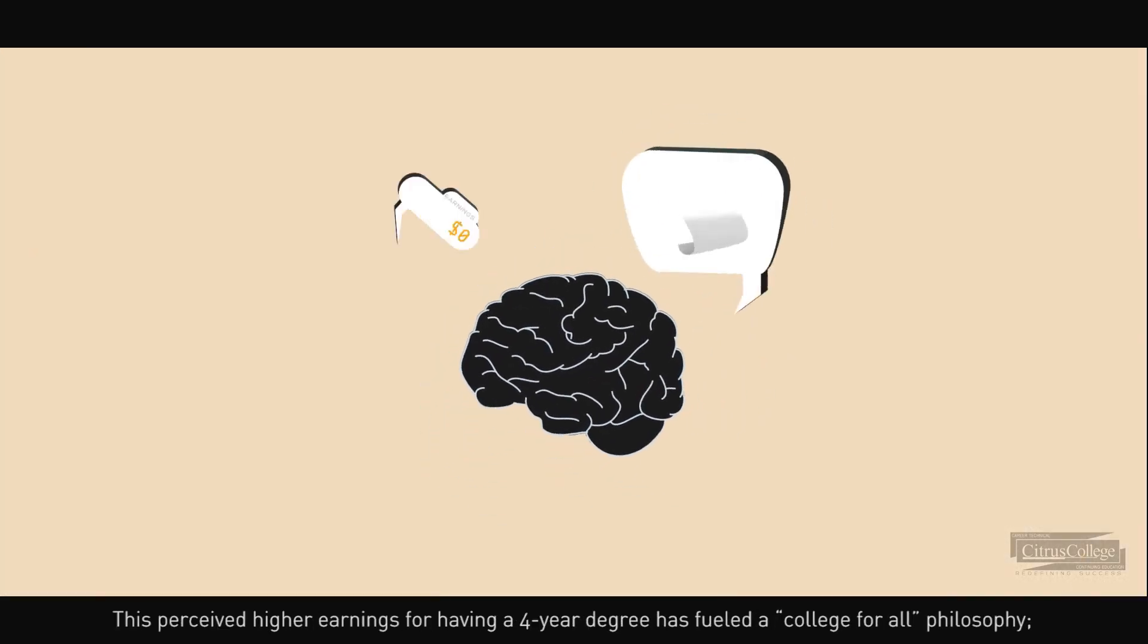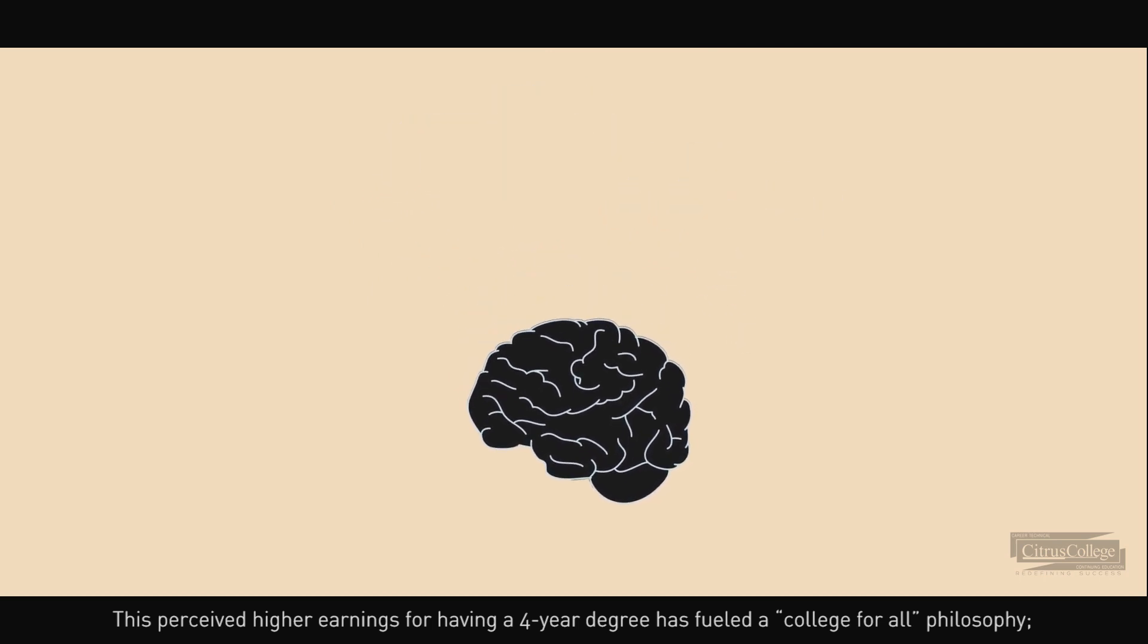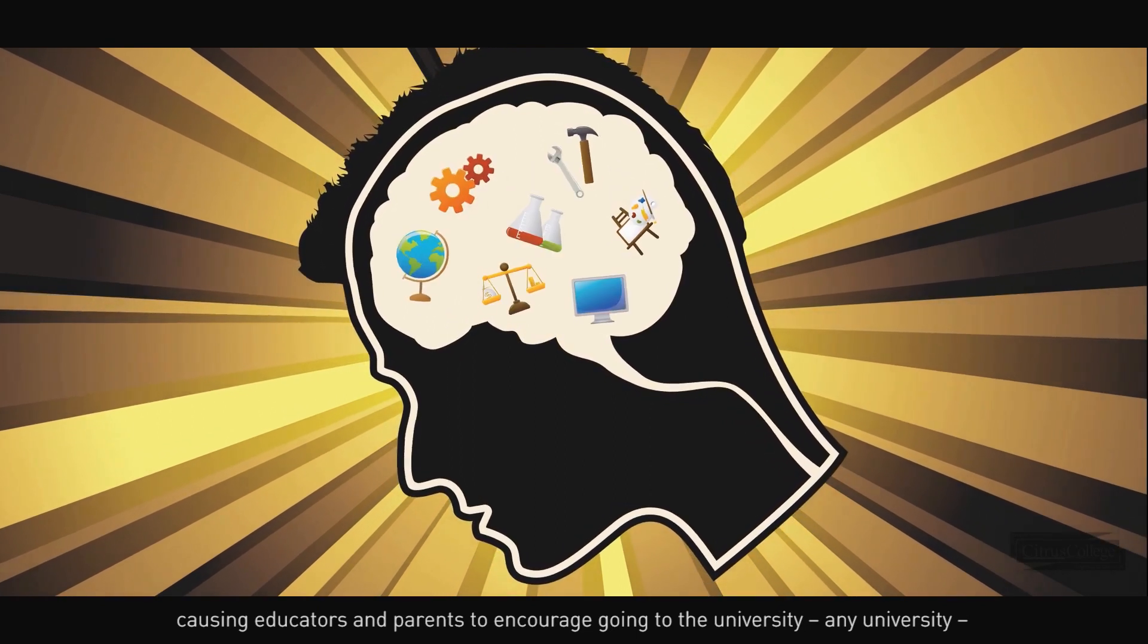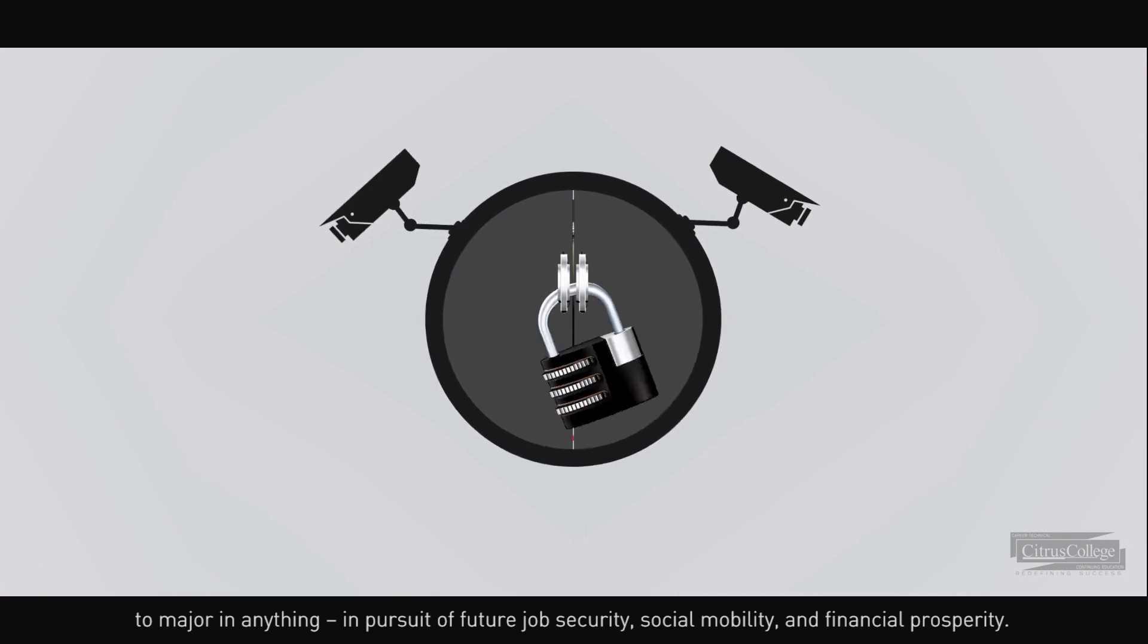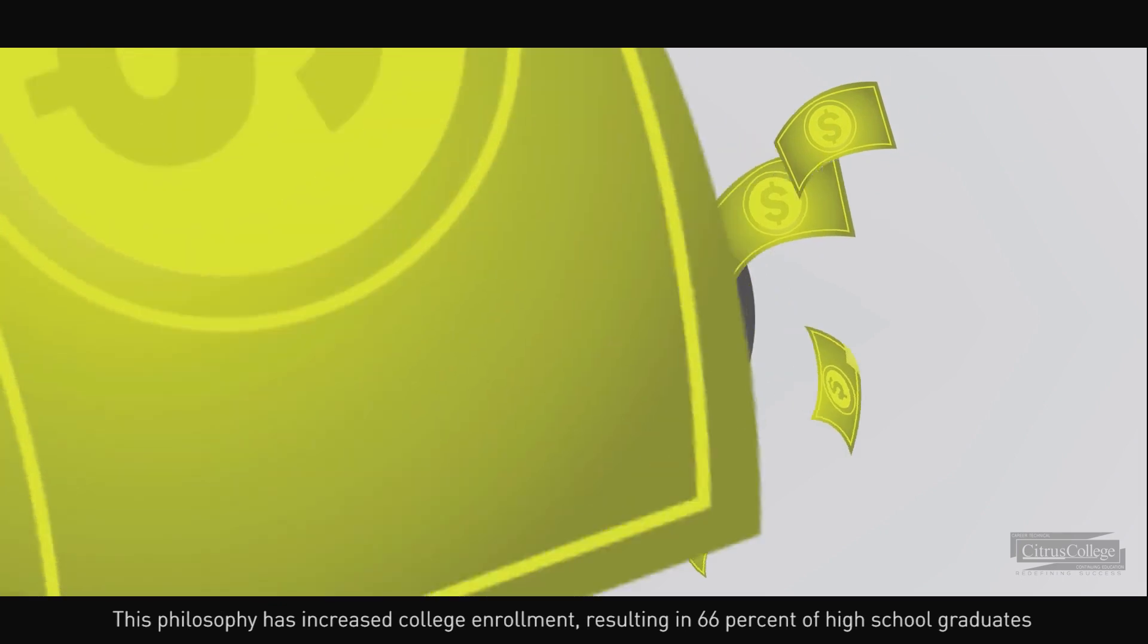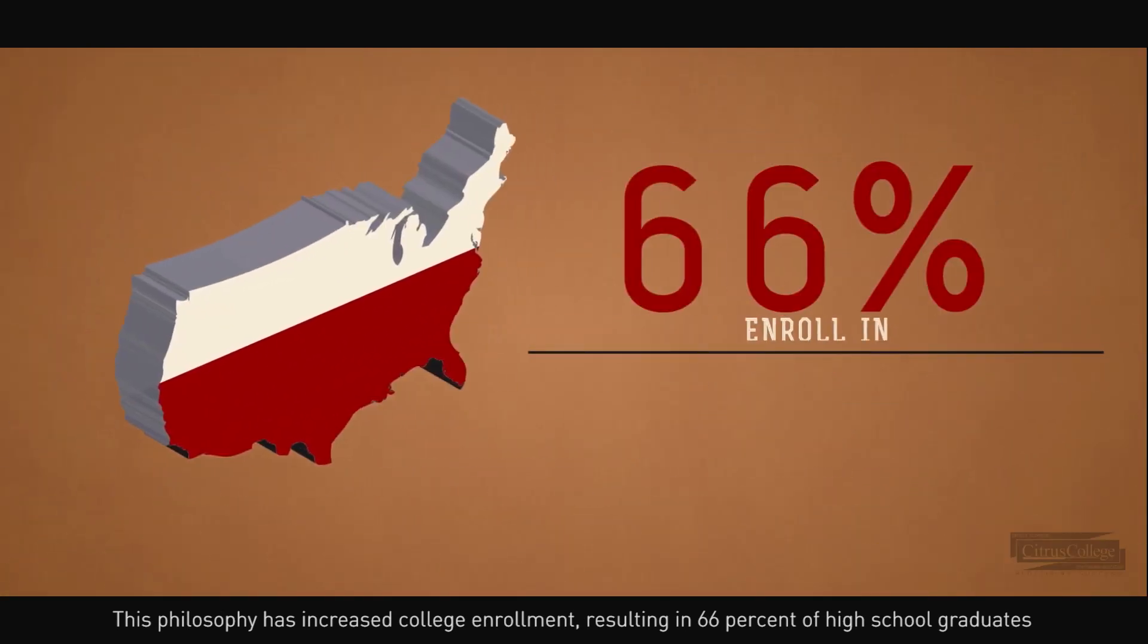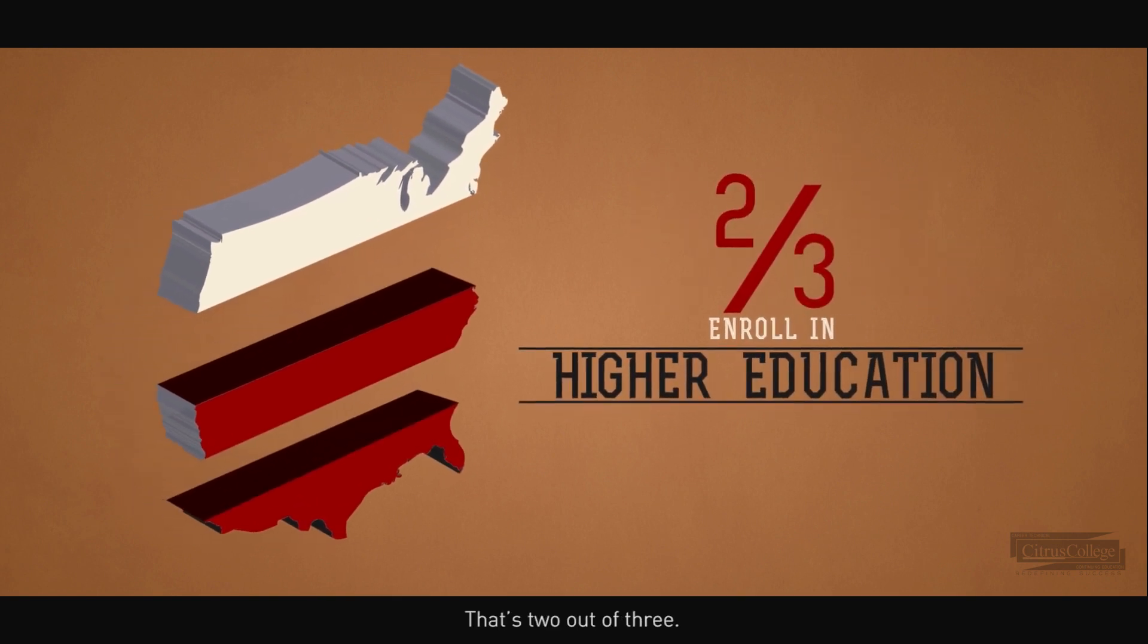This perceived higher earnings for having a four-year degree has fueled a college for all philosophy, causing educators and parents to encourage going to the university to major in anything in pursuit of future job security, social mobility, and financial prosperity. This philosophy has increased college enrollment, resulting in 66% of high school graduates enrolling in higher education right after high school.